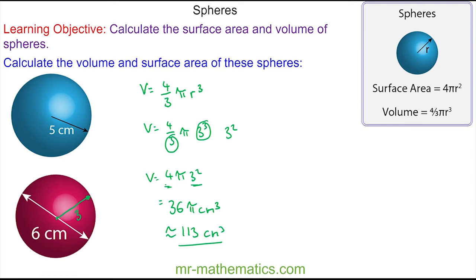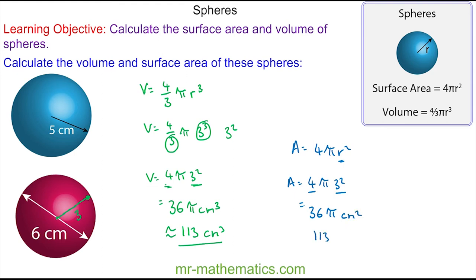For the surface area we use the formula 4πr². Again the radius is 3, so we have the area is 4 multiplied by π multiplied by 3 squared. 9 times 4 is 36, so we have 36π centimeters squared. As a decimal this is approximately 113 centimeters squared to three significant figures.